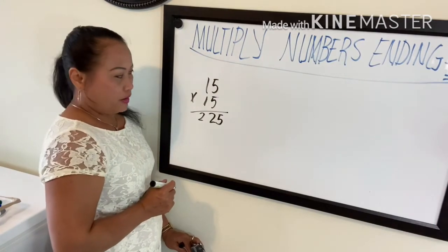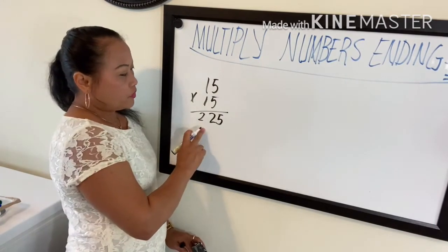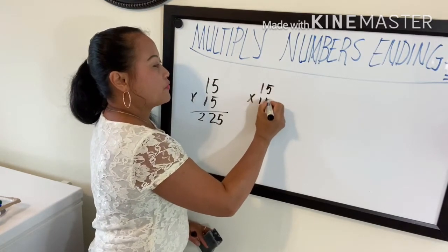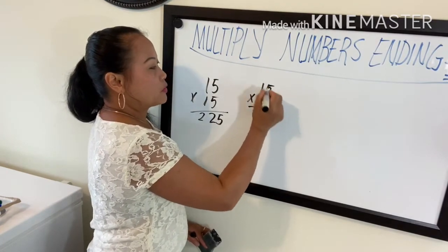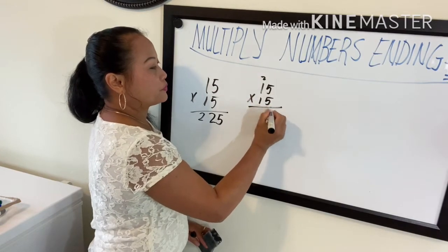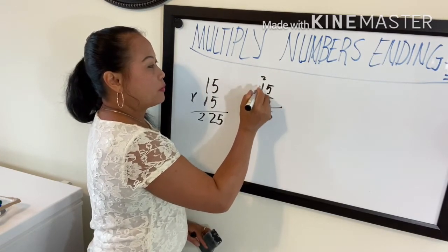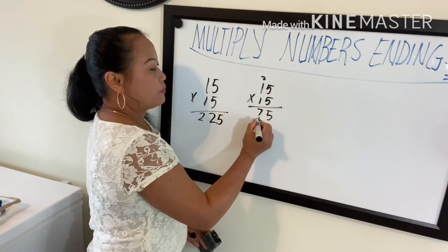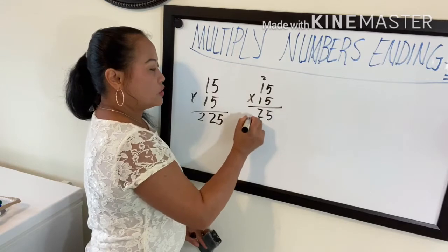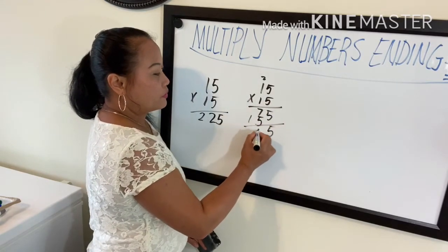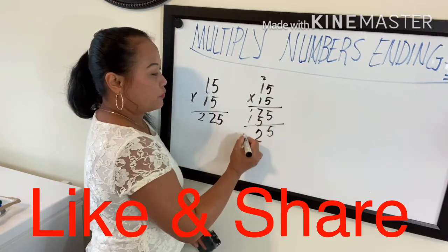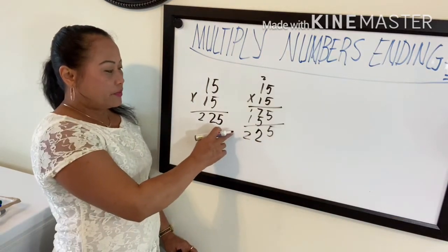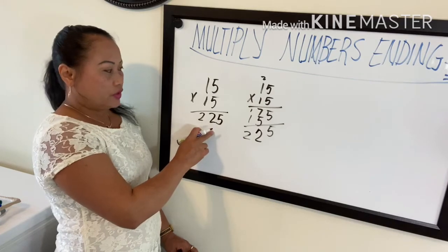Instead, if you multiply 15 times 15 the long way: 5 times 5 is 25, 5 times 1 is 5 plus 2 is 7, 1 times 5 is 5, 1 times 1 is 1 — you get 225. You can see it comes to the same answer.